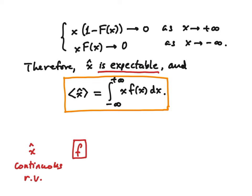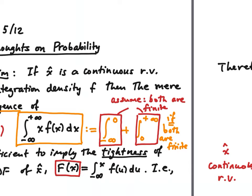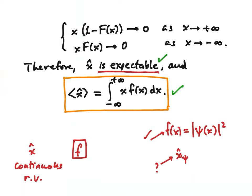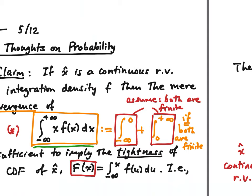In quantum mechanics, we have the wave function ψ, which is a complex-valued function. When we take the mod square of that, we get a density for a random variable interpreted as the position of the particle. We know it only through its density. So the typical situation: all you have to do is check that the integral of x·f(x) converges. If it does, the random variable x-hat is indeed expectable, and that integral gives the expected value.